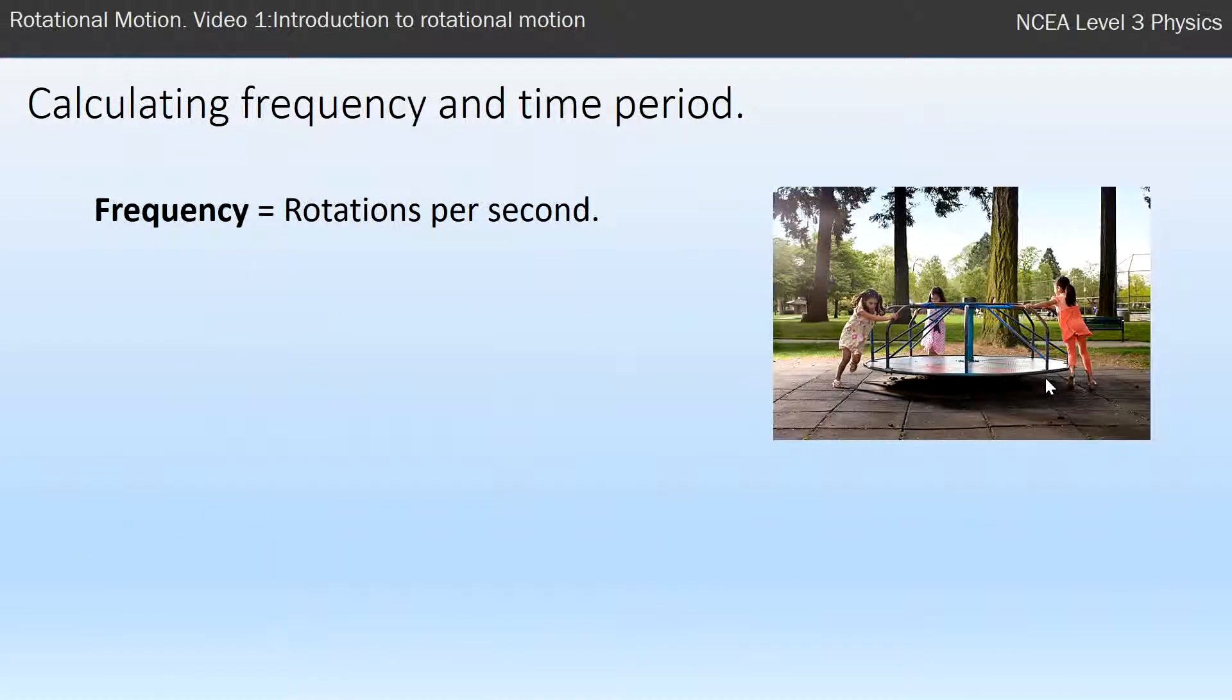So we have a name for that which we call frequency. Frequency is our new word to describe rotations per second. It has a symbol f and the unit is hertz. One hertz is equivalent to one rotation per second. Two hertz is two rotations per second.